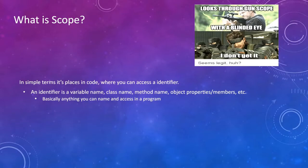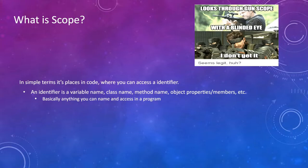So what is scope? In simple terms, it's the places in code where you can access an identifier. An identifier is a variable name, class, method name, object properties, members of those objects, signals — anything you can access by name in a program. Pretty broad.